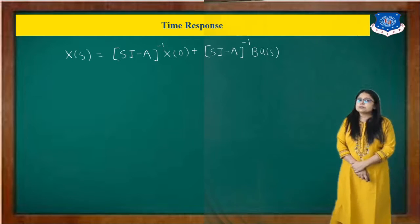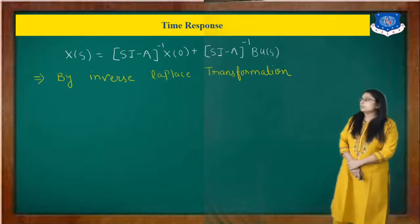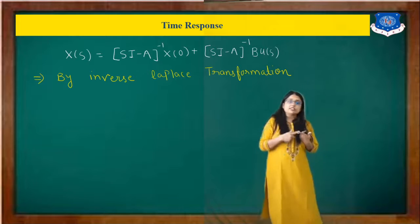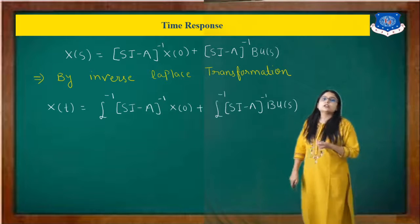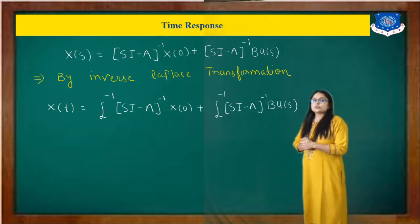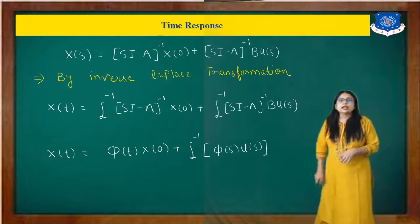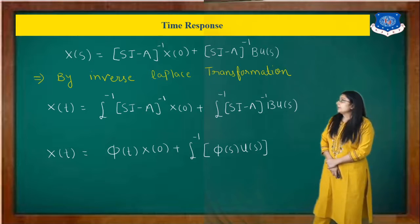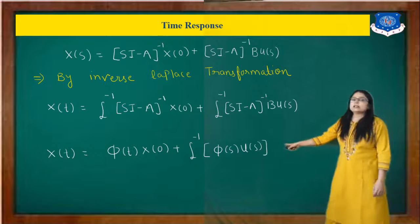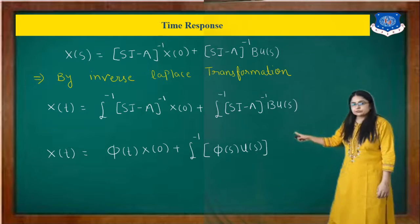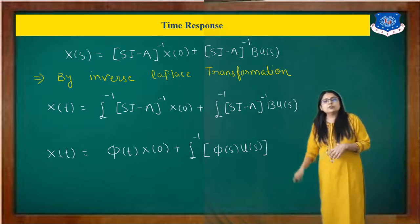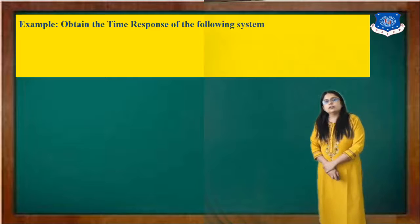Now we have to take the inverse Laplace of this equation to find x(t). So x(t) equals the inverse Laplace of (sI minus A)^(-1) times x(0), plus the inverse Laplace of (sI minus A)^(-1)·B·U(s). Since the inverse Laplace of (sI minus A)^(-1) is the state transition matrix phi(t), this gives phi(t)·x(0) plus inverse Laplace of phi(s)·B·U(s), where phi(s) equals (sI minus A)^(-1). You have to use this formula to find out x(t). Now let's start one example.